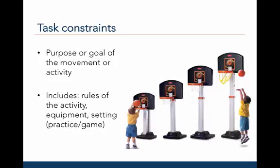Task constraints are the characteristics, purpose, or goals of the movement activity, including factors such as the rules of the activity, the equipment, and the setting — for example, a practice or a game. Here is an example of a change in task characteristics: when the hoop is low, the child can dunk the ball, but when the hoop is raised, the child must shoot the ball. So by changing the task constraints — namely the height of the basketball hoop — the movements that are possible or required have correspondingly changed.